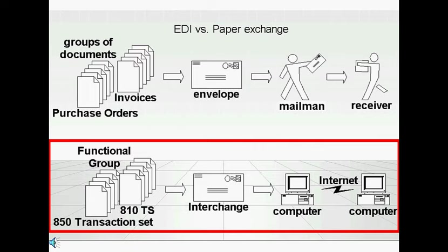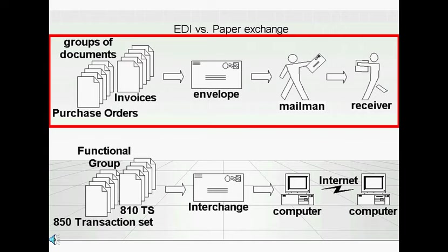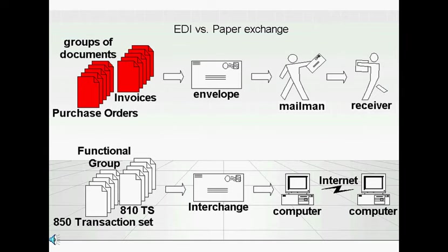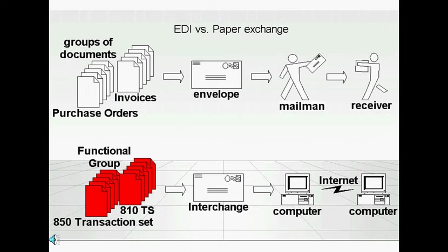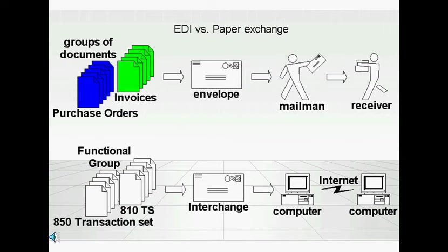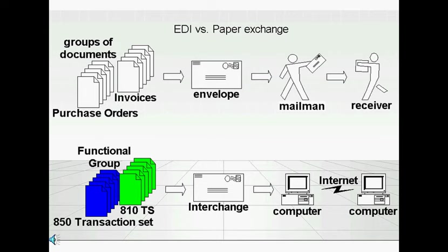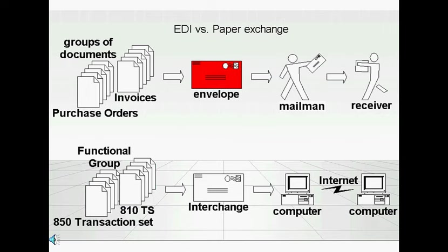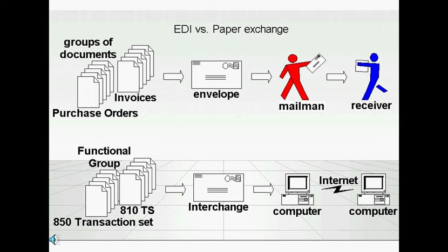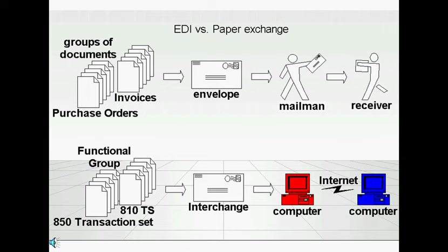EDI was designed to be an electronic replicate or mirror of a paper document transaction. For example, the paper documents or forms are called transaction sets in EDI. How the documents are arranged and grouped by their departments is equivalent to how the functional group segments separate the transaction sets by their functions. The paper envelope that encloses the documents is equivalent to the interchange segment that encloses the group of transaction sets. The person sending the mail and the one receiving it would be equivalent to a computer sending an EDI file and a computer receiving it.